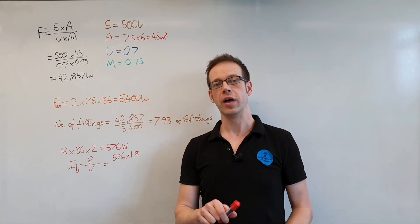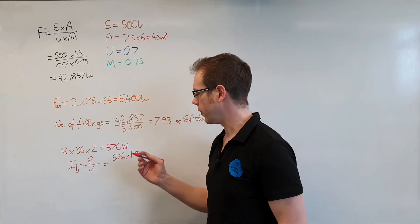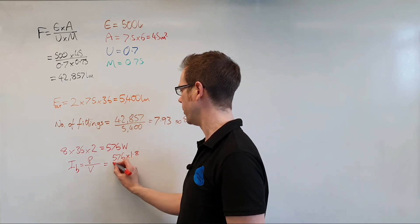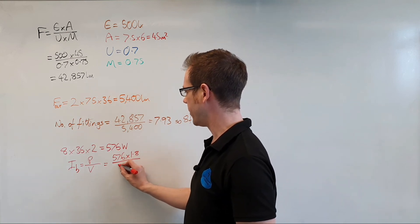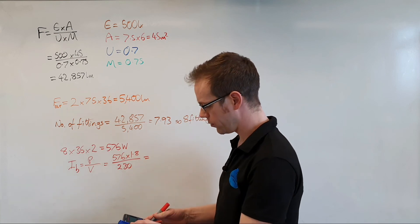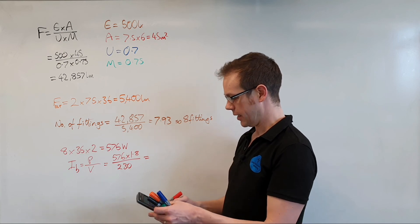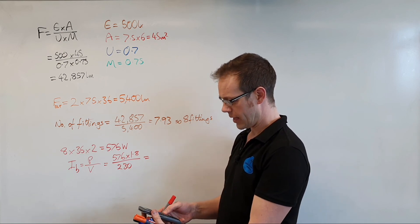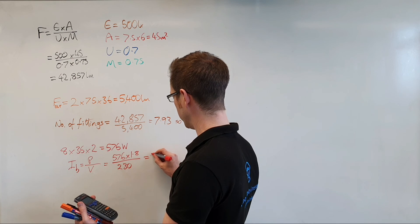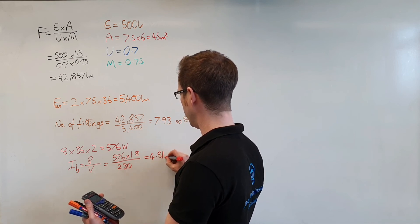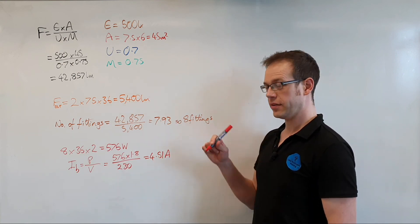Since we don't know the specific power factor of this fitting, we apply the 1.8 multiplier. If you're unsure about this, speak to your electrical lecturer before your exam. So the design current Ib equals 576 times 1.8, divided by 230 volts, which gives us 4.51 amperes.